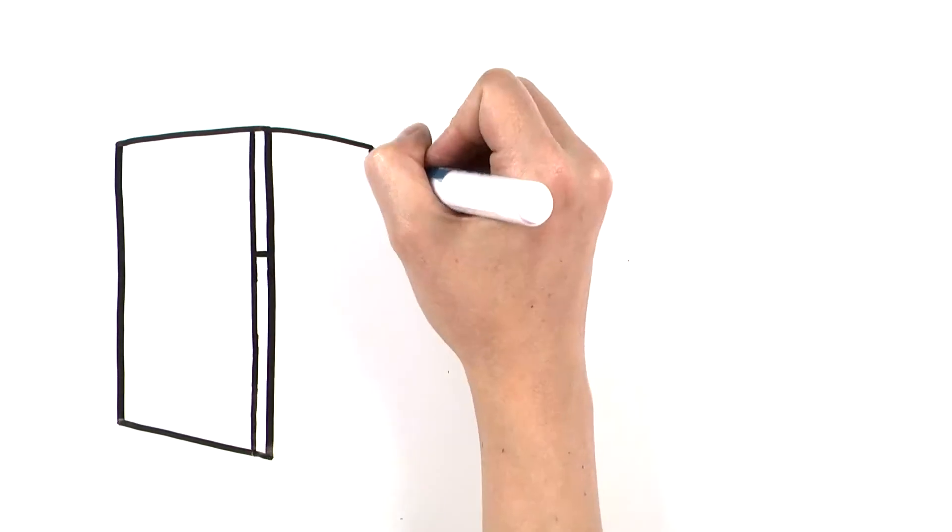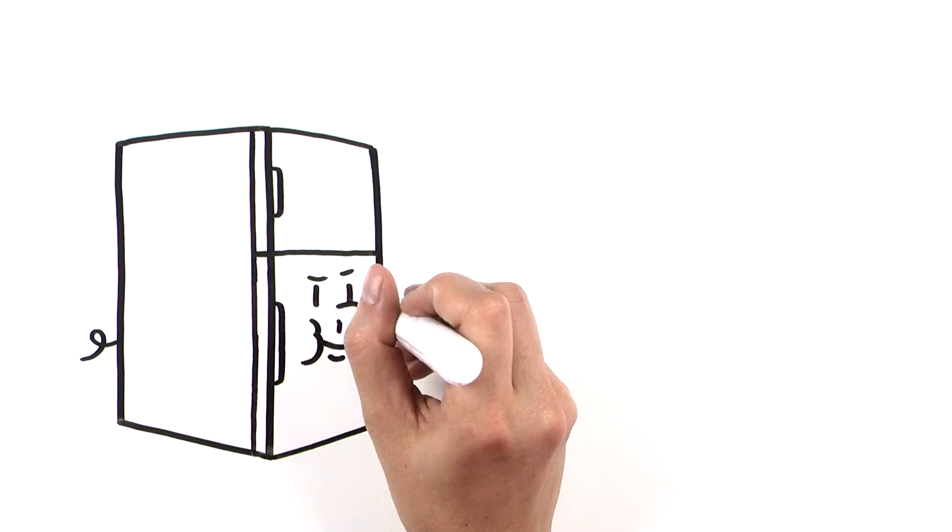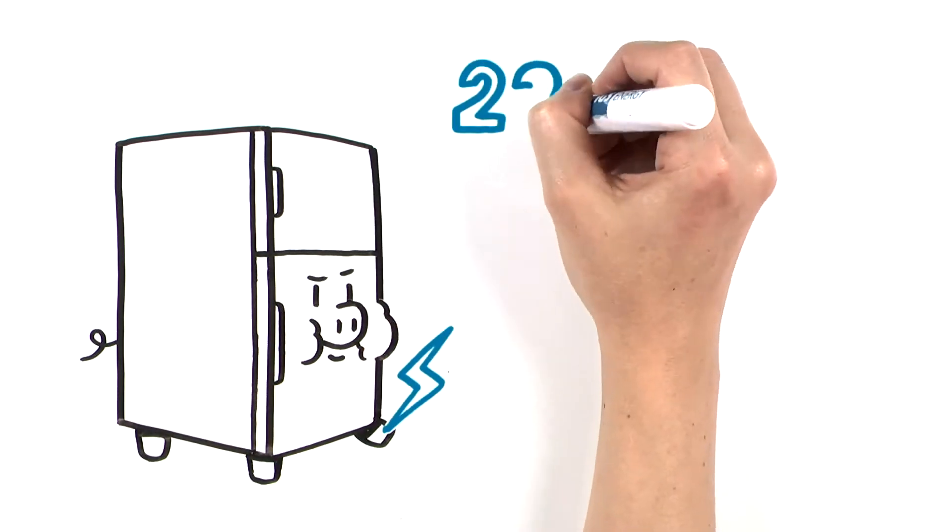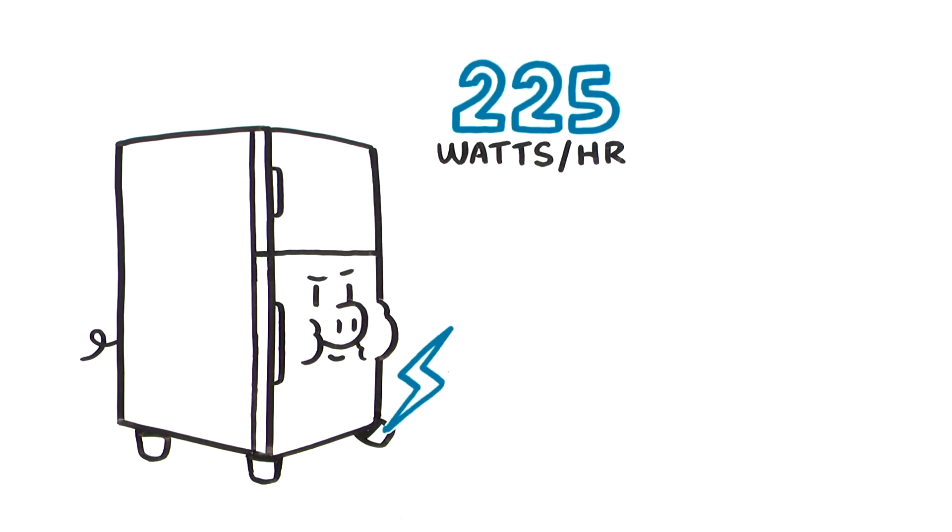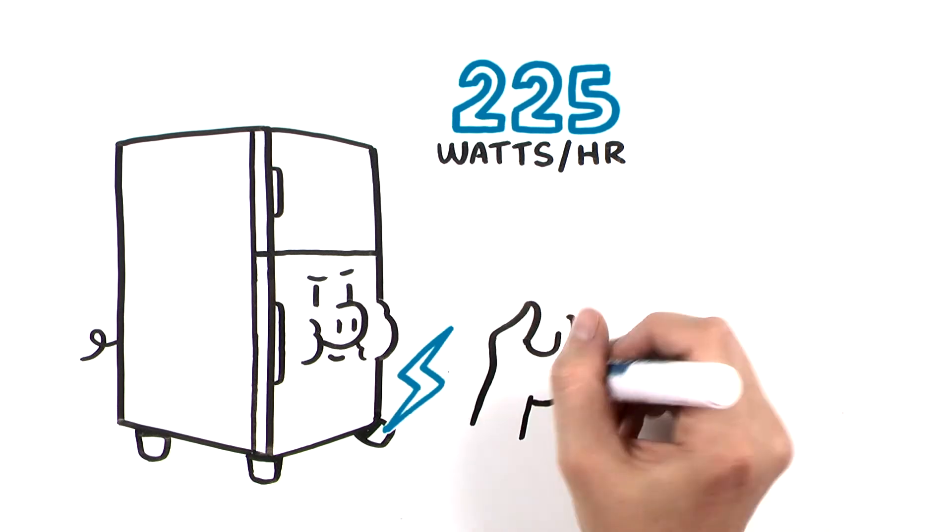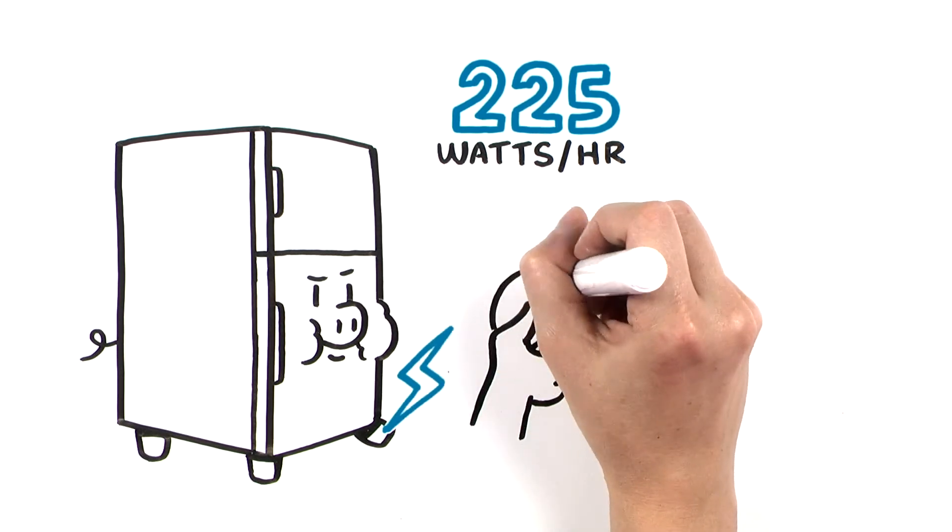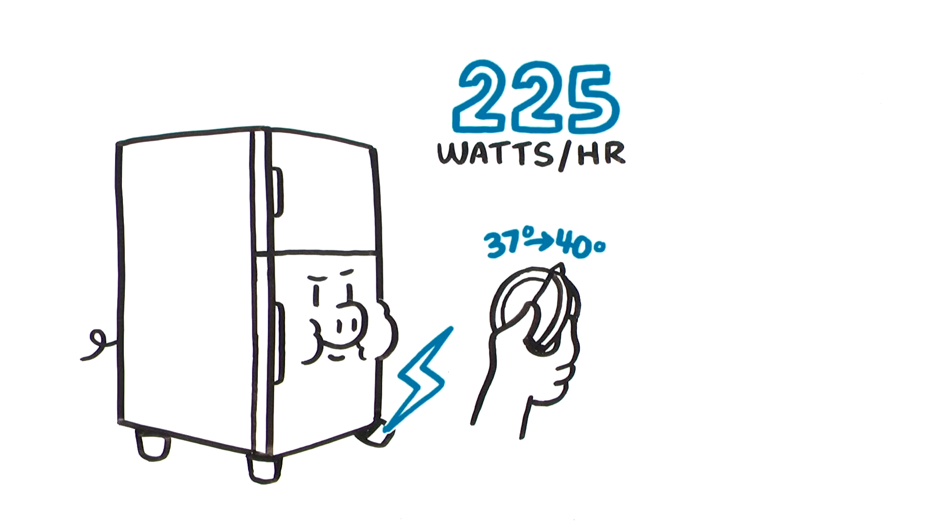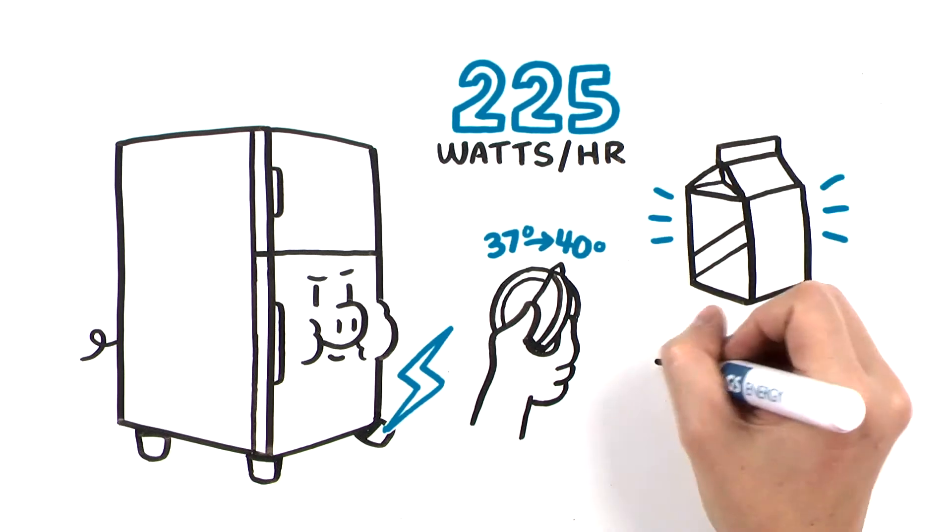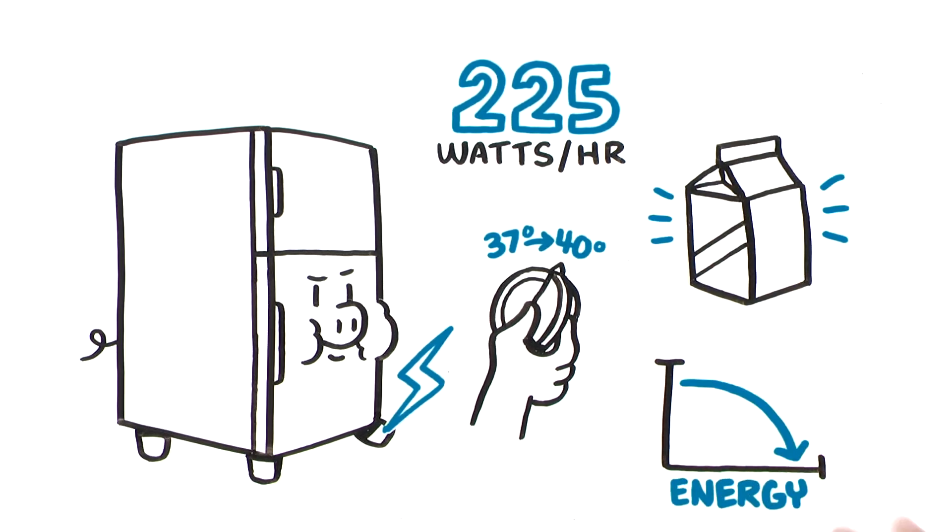Another big energy hog is in your kitchen, the refrigerator. It uses about 225 watts per hour, but you can control this cost and energy use by setting the temperature between 37 and 40 degrees to keep your food safe and cold without making your unit work harder than necessary.